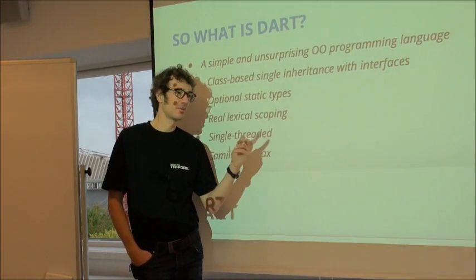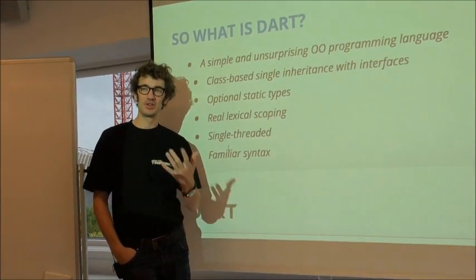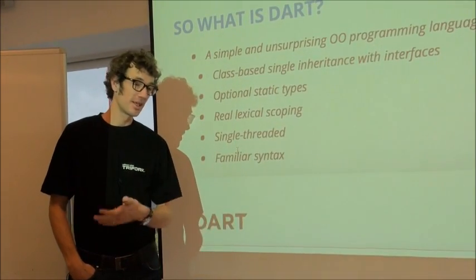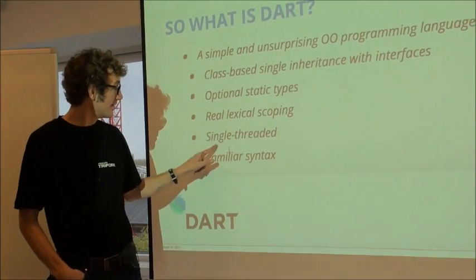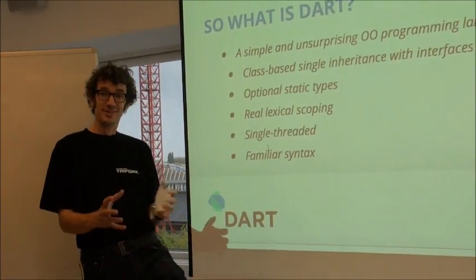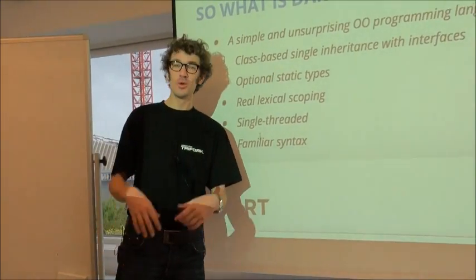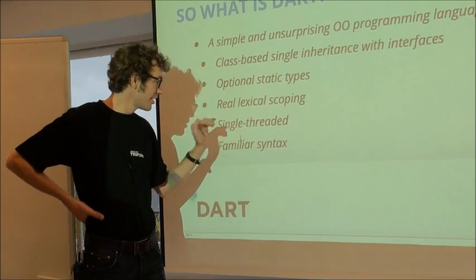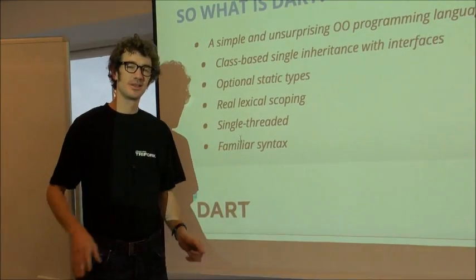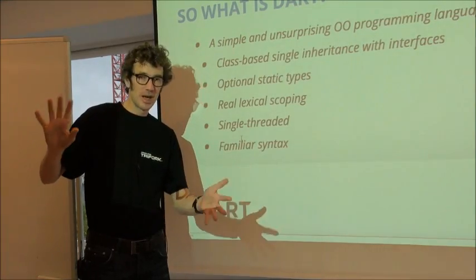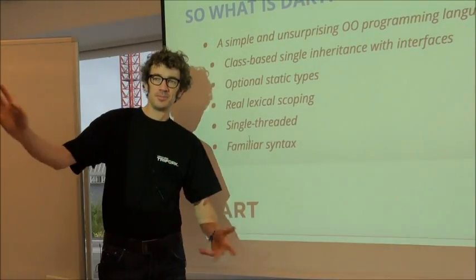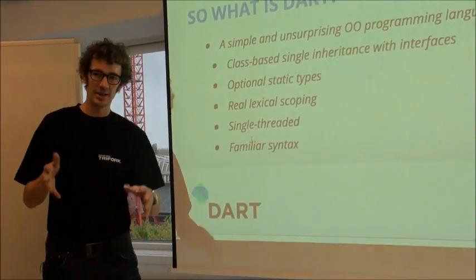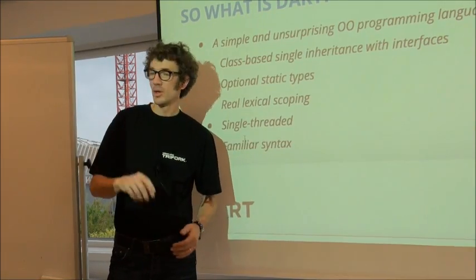JavaScript has this terrible construct — I believe it's called 'with' — where you can inject names into your lexical scope, which really breaks performance badly. Dart is also single-threaded at its core. At first I was worried about how you can make a modern language single-threaded, but there is more to it. And it has familiar syntax — a mix between JavaScript-ish and a little Scala-ish, with nice inline anonymous functions using an arrow syntax.